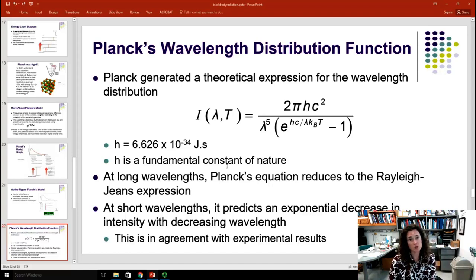Now, at long wavelengths, Planck's equation reduces to the Rayleigh-Jeans expression. And so, it fits classical physics at long wavelengths. And at short wavelengths, it actually predicts the exponential decrease in the intensity with the decreasing wavelength. And this is in agreement with the experimental results. And so, the model was a resounding success, and it was one of the first times that the discretization of energy levels was discussed in physics. And it helped give rise to quantum mechanics that came later.